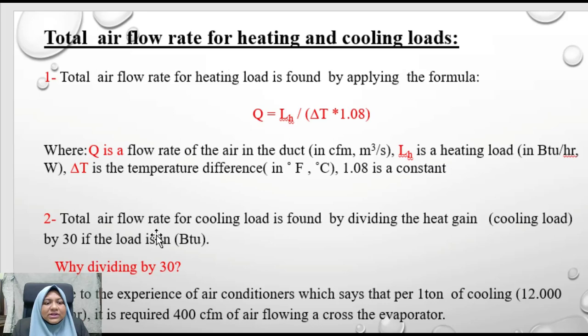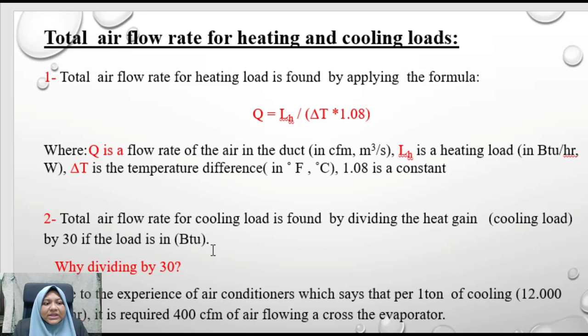The total airflow rate for cooling load is found by dividing the heat gain (cooling load) by 30 if the load is in BTU. This is because experience from air conditioning experts shows that one ton of cooling — equal to 12,000 BTU per hour — requires 400 CFM of air flowing across the evaporator. This is the 400 CFM rule of thumb.